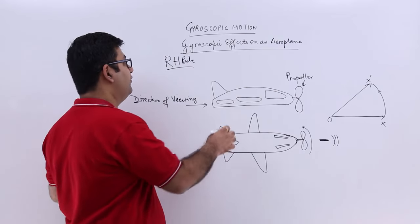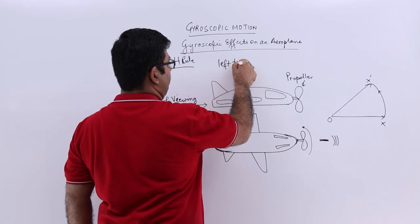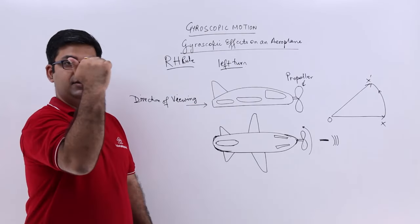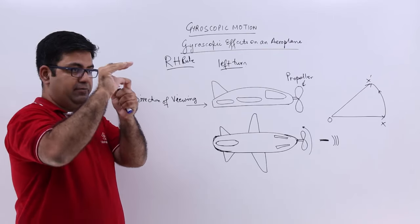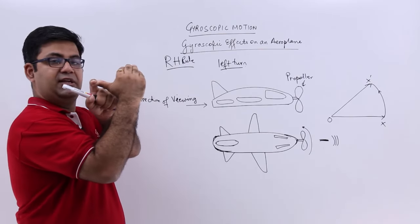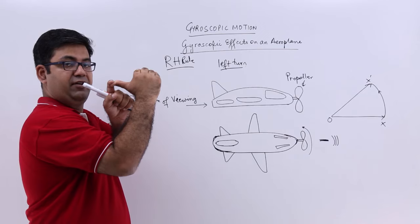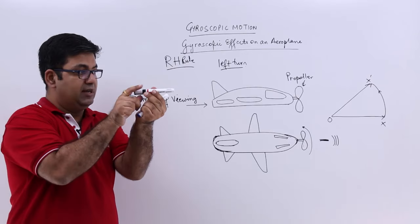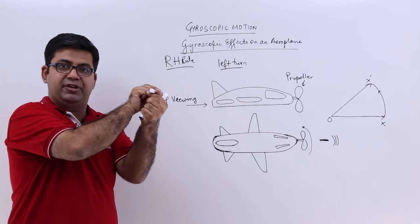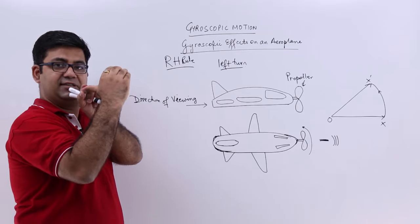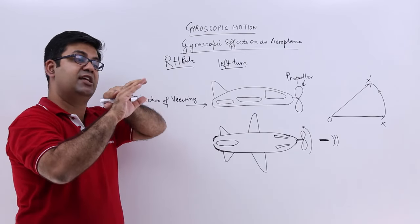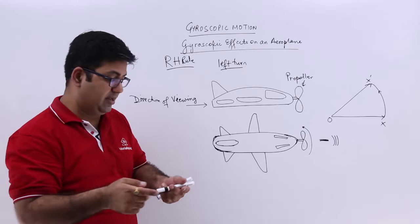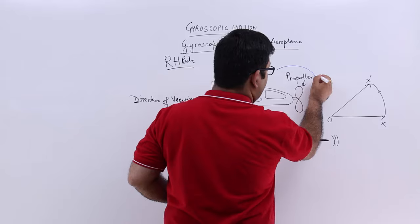Now, let us say we have to take a left turn. I will take this thumb and make it turn to the left. So viewing from the rear of the aircraft, a left turn means this axis has to turn left. When this thumb goes left, these fingers curl in the forward direction. This means that the active gyroscopic couple will be acting in the forward direction.